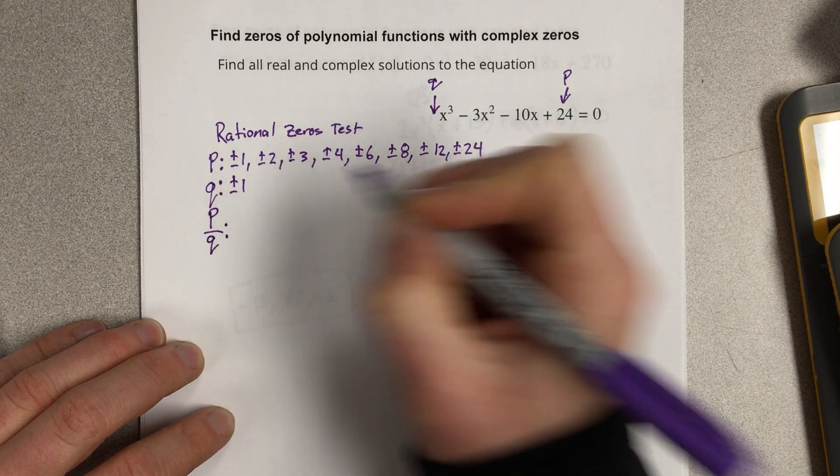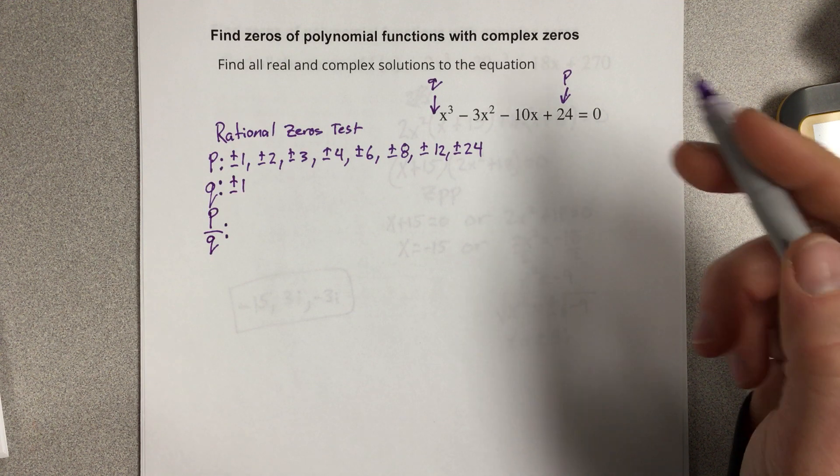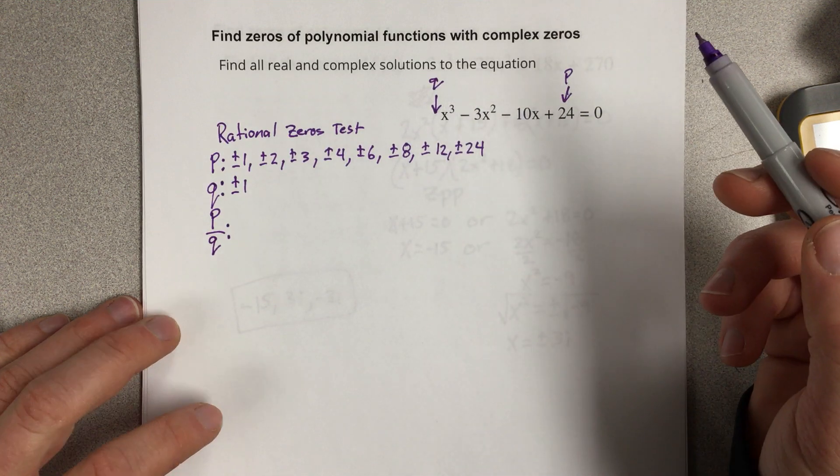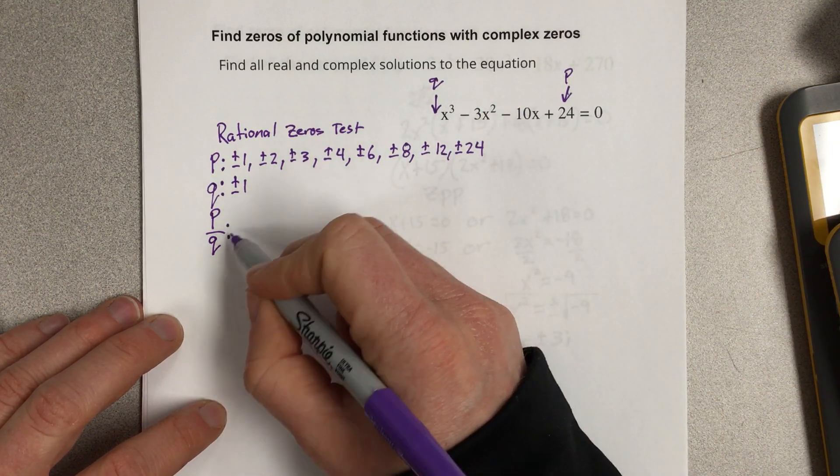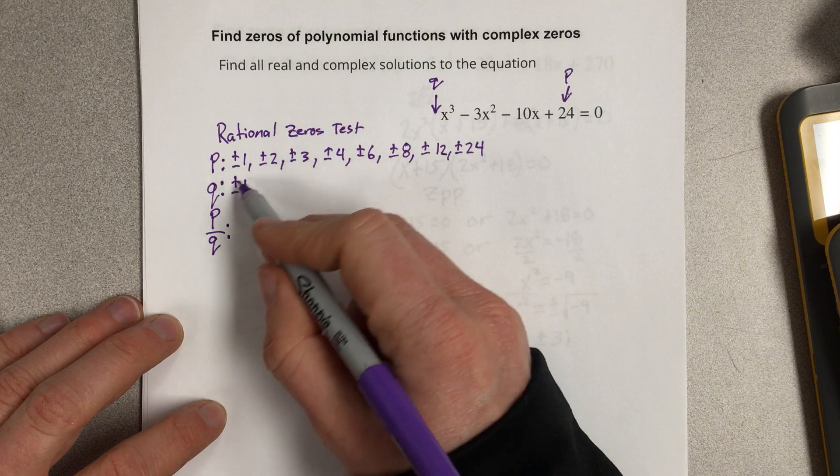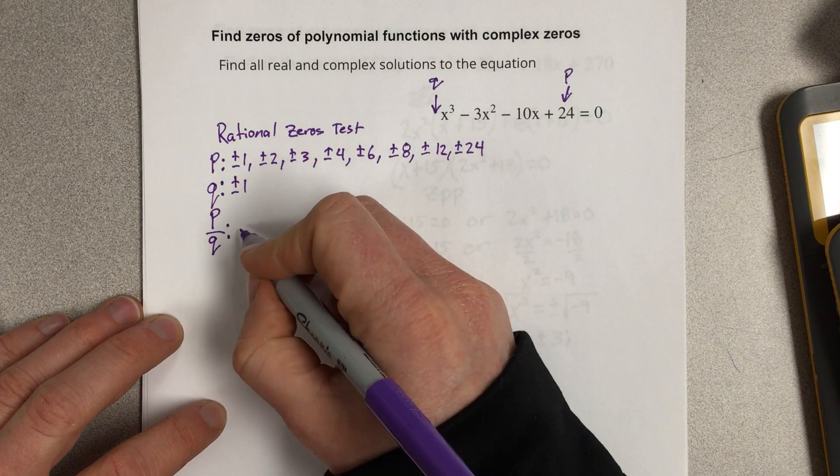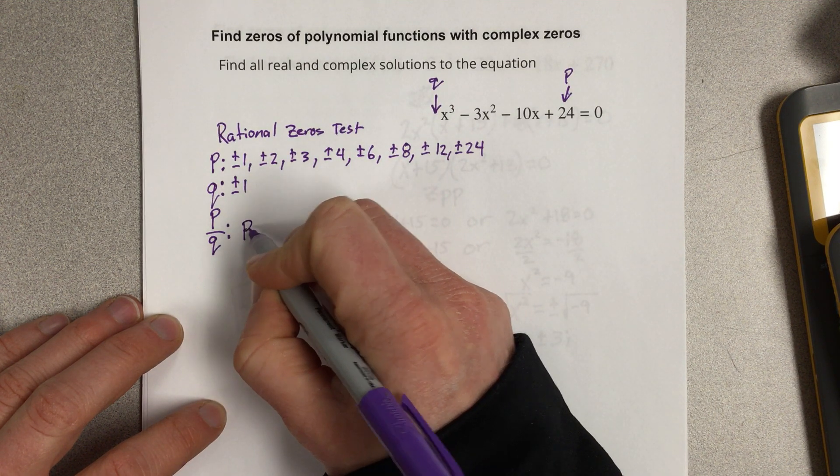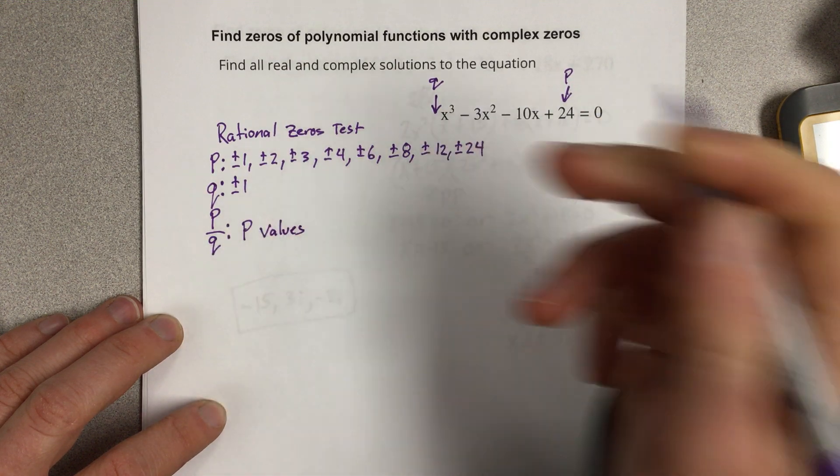If I take p divided by q, it will give me all the possible rational zeros that I could get for this cubic. Now, there could be three of them, because it's a cubic, or there could just be one and then two complex solutions. So I'm just going to say that p over q, if I divide all of these by one, would just be the p values.